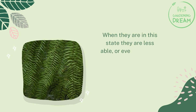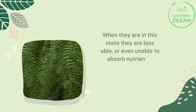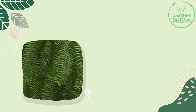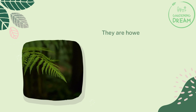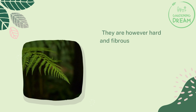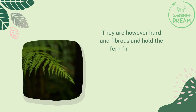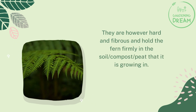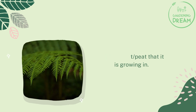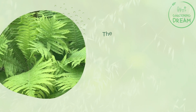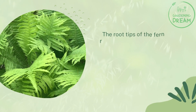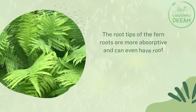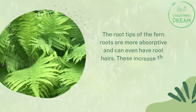As fern roots age, the cortex becomes clarified, meaning the roots become brown and hard. In this state they are less able, or even unable, to absorb nutrients. They are however hard and fibrous, holding the fern firmly in the soil, compost, or peat. The root tips are more absorptive and can even have root hairs.